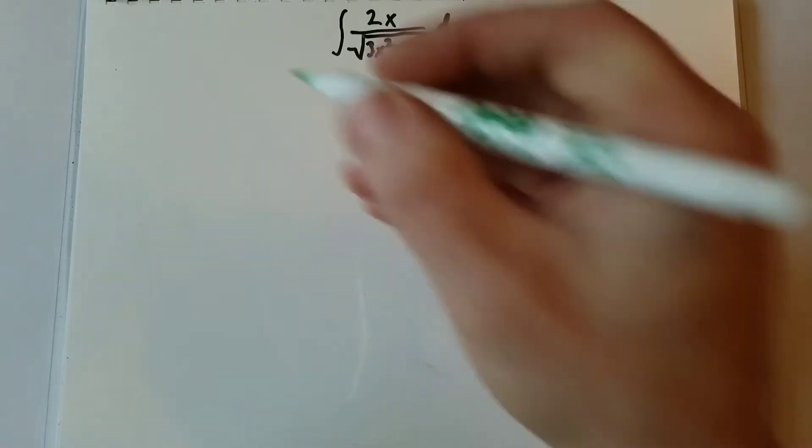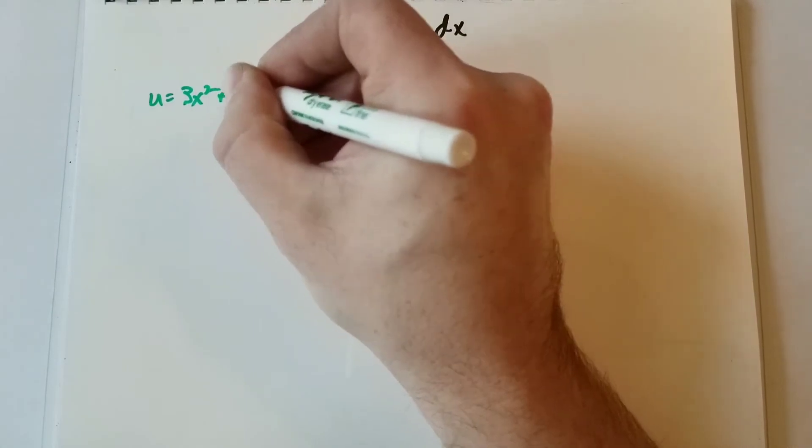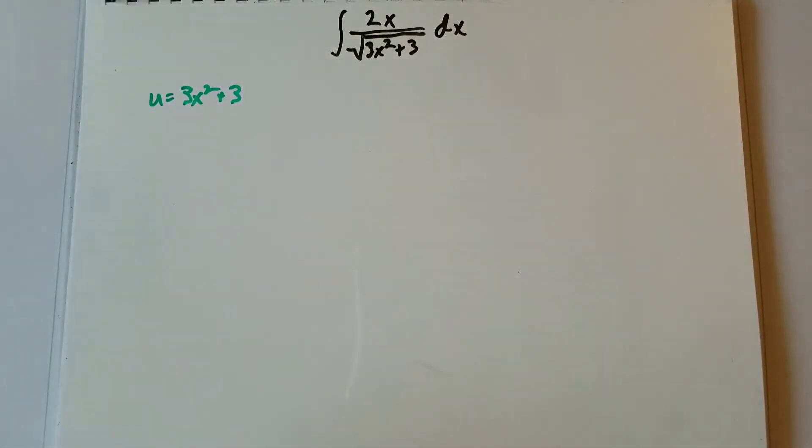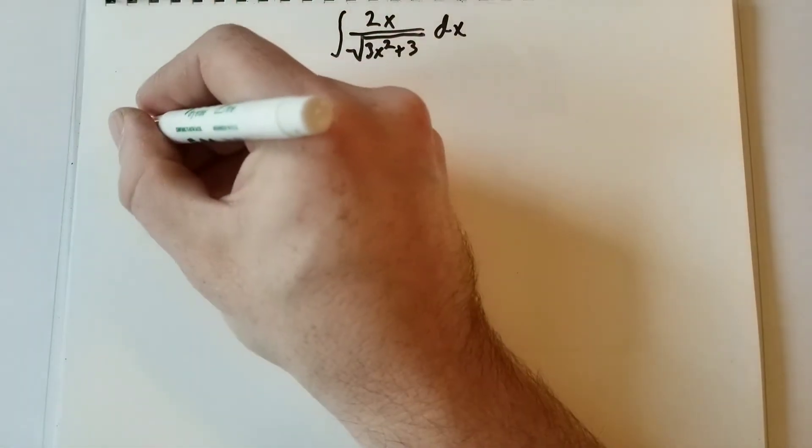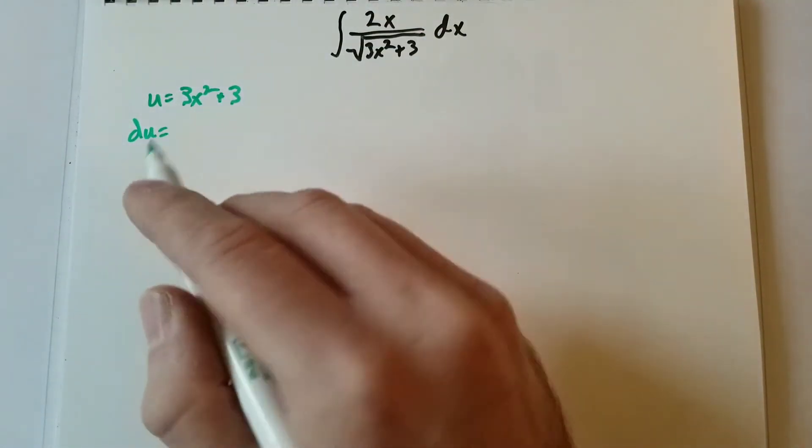So let's get right to it. Our u equals 3x squared plus 3. Okay, now at this point, we've got to take the derivative of both sides. So that becomes du equals the derivative of 3x squared plus 3, which is 6x.